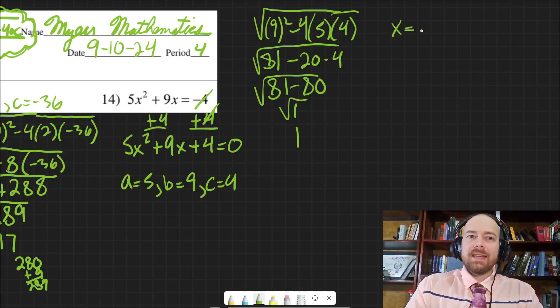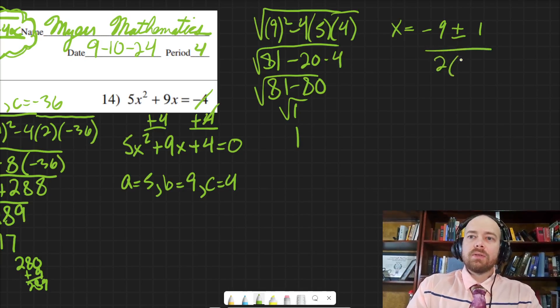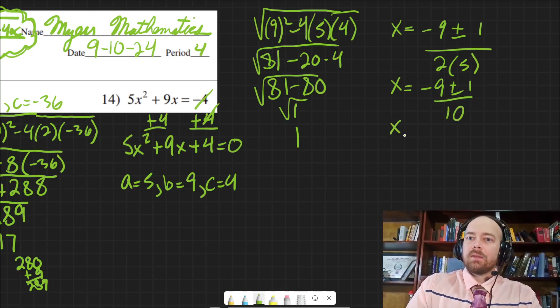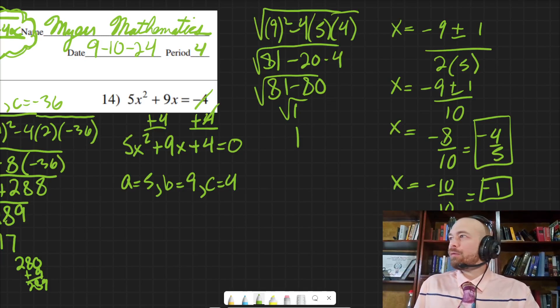So x is equal to negative b, where's b? b is 9. So negative b plus or minus, and I did all the square root of b squared minus 4ac part, that's just 1, all over 2a. So then this is going to be negative 9 plus or minus 1 over 10. So then that's going to be negative 9 plus 1 is negative 8 tenths, which is negative 4 fifths. And for the other one, negative 9 minus 1 is negative 10 over 10, which is negative 1.